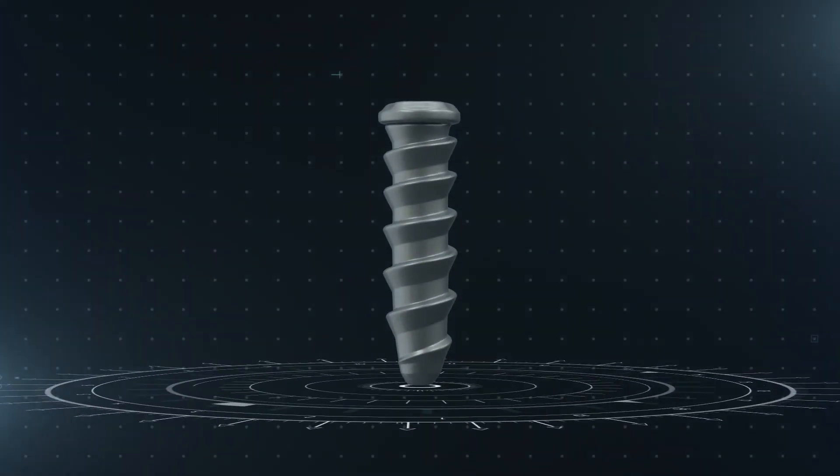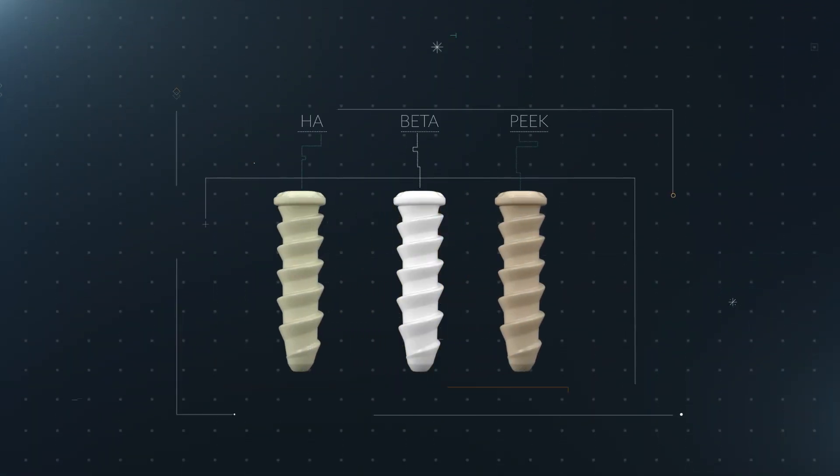The Sironix ACL screw has a superior pull-out strength and is available in HA, Beta-TCP, and PEEK variants.